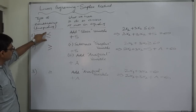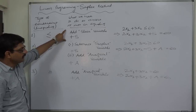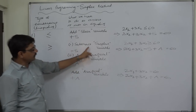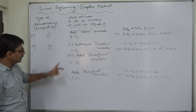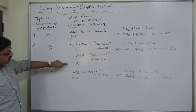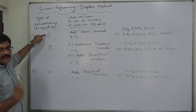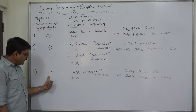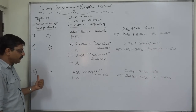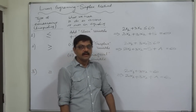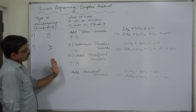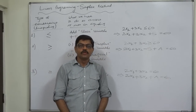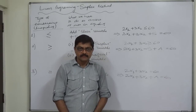To summarize: there are three possibilities for the sign of a constraint. If it is less than or equal to, add a slack variable (representing unused capacity). If it is greater than or equal to, subtract a surplus variable and also add an artificial variable. If the constraint is already an equality, add an artificial variable. After converting all constraints into this standard form, we can solve the problem by the simplex method. Thank you very much.